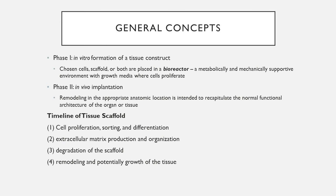In the second phase, you have the in vivo implantation of this tissue construct. This is the remodeling intended to recapitulate the normal functional architecture of an organ or tissue. The typical scaffold timeline is: first, cells proliferate, sort themselves, and differentiate into key cells required for that particular tissue. The cells then produce extracellular matrix and organize the native tissue scaffold. The third phase involves intended degradation of the original scaffold, as the extracellular matrix takes its place, followed by remodeling and growth of tissue.